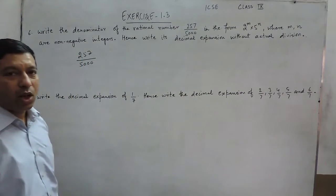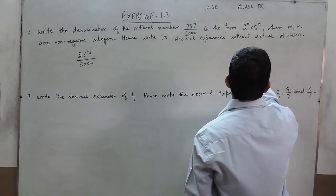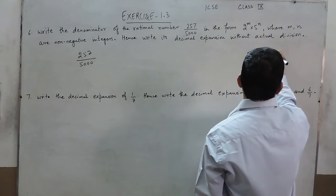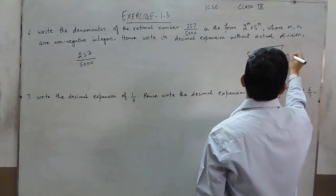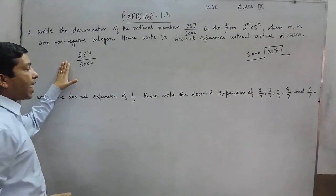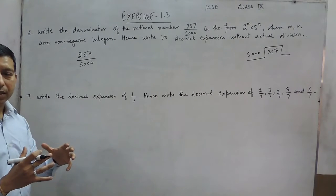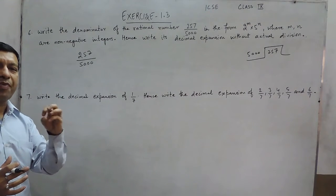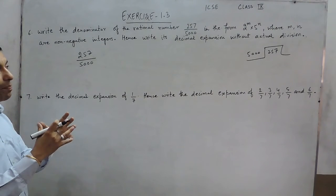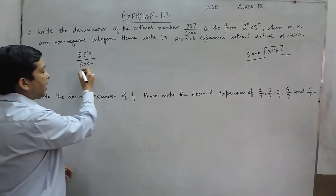write its decimal expansion without actual division. One method of solving it is dividing the number like 5000, 257 and now we can divide it. But we have to solve it without actual division. That means if in the denominator there are equal number of factors of 2 and 5, then they can be multiplied and we can only shift the decimal place.